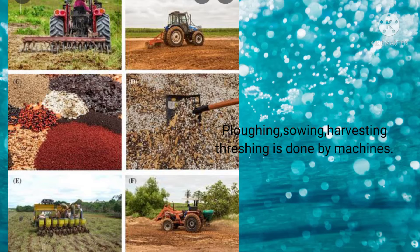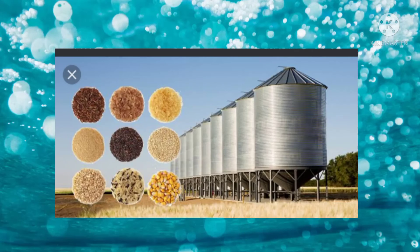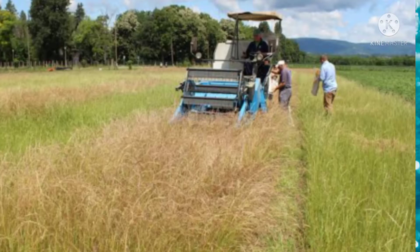All the work is done by machines. Even the storing of food grain in the silos is also done by machines. Here you will see only a few workers are required to cultivate thousands of hectares of land, since every work is done by modern machines.